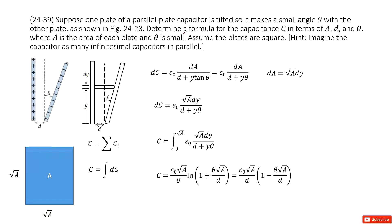Now we need to determine the formula for the capacitance in terms of A, d, and theta. How can we do that? We can consider the hint. The hint almost gave you the solution. It tells you to imagine the capacitor as many infinitesimal capacitors in parallel.